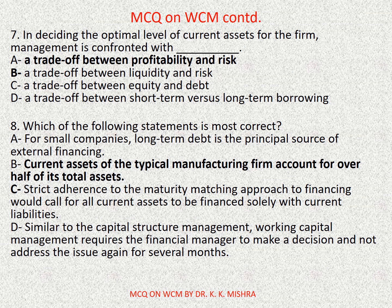Question number seven: in deciding the optimal level of current assets for the firm, management is confronted with dash. Options are: A) a trade-off between profitability and risk, B) a trade-off between liquidity and risk, C) a trade-off between equity and debt, D) a trade-off between short-term versus long-term borrowing. Correct option is A: a trade-off between profitability and risk.